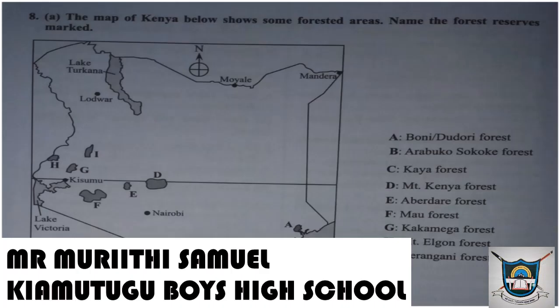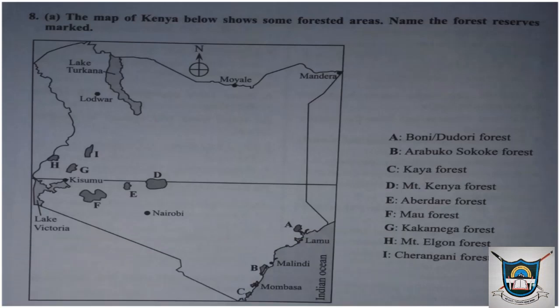On the map displayed on your screen, this is the map of Kenya showing some forested areas, presented in the form of a question. You can see the map of Kenya and those forested reserves — we have the Boni or Dundori forests, the Arabuko Sokoke forests found at the coast, together with the Boni and the Kaya forests, marked on the map as A, B, C.